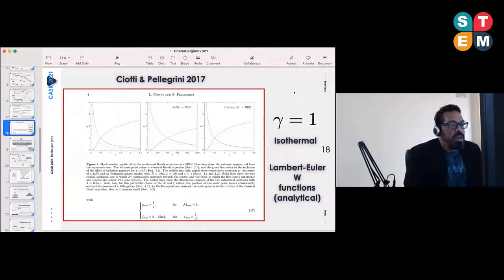Now I want to mention this work of Shcherbakov and Pellegrini 2017, where they were able to mathematically describe these accretion processes for the case of gamma equal to one, which is representing an isothermal flow.